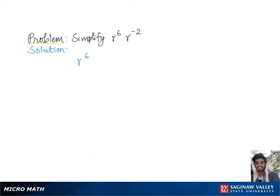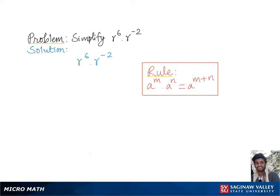To simplify r to the sixth times r to the negative second, we go over the rule which says to multiply two or more powers with a common base: we keep the base and add the exponents together.